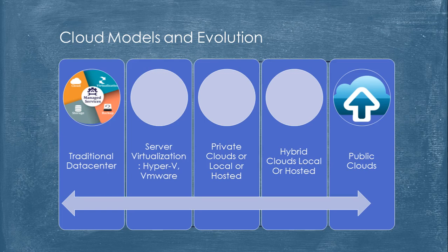In public cloud, 100% of your resources are with the cloud provider. In hybrid cloud, part of your infrastructure is on your own premises and the rest is with a cloud provider — for example, the front end of your web application in the cloud, while the database stays in your own infrastructure for security purposes. In the next chapter, we'll learn about the different deployment models: SaaS, PaaS, and IaaS.